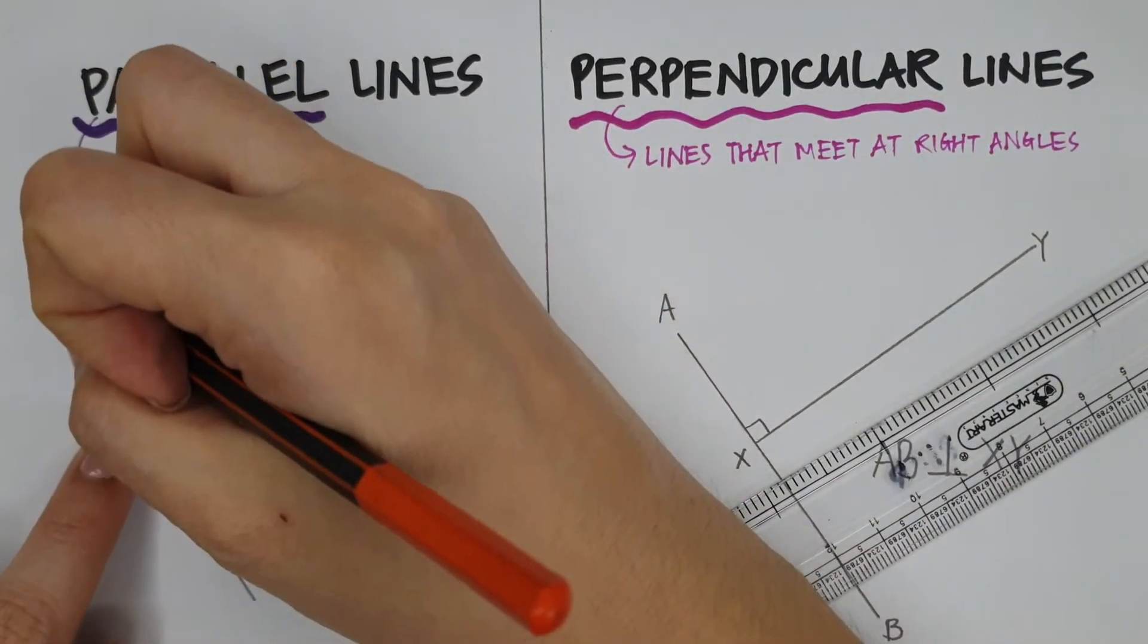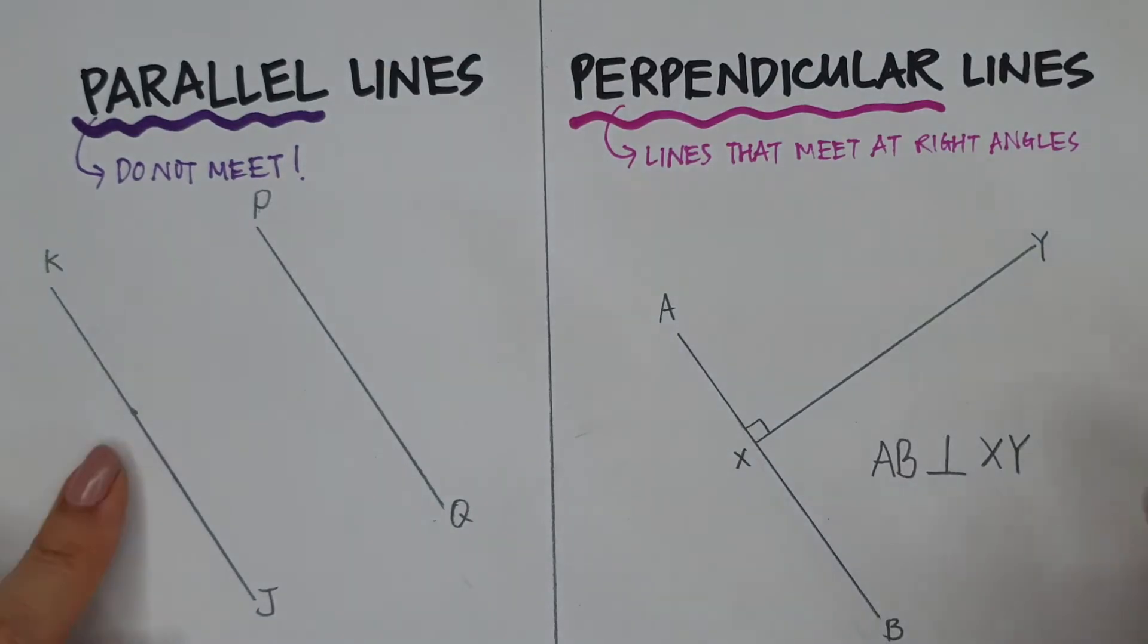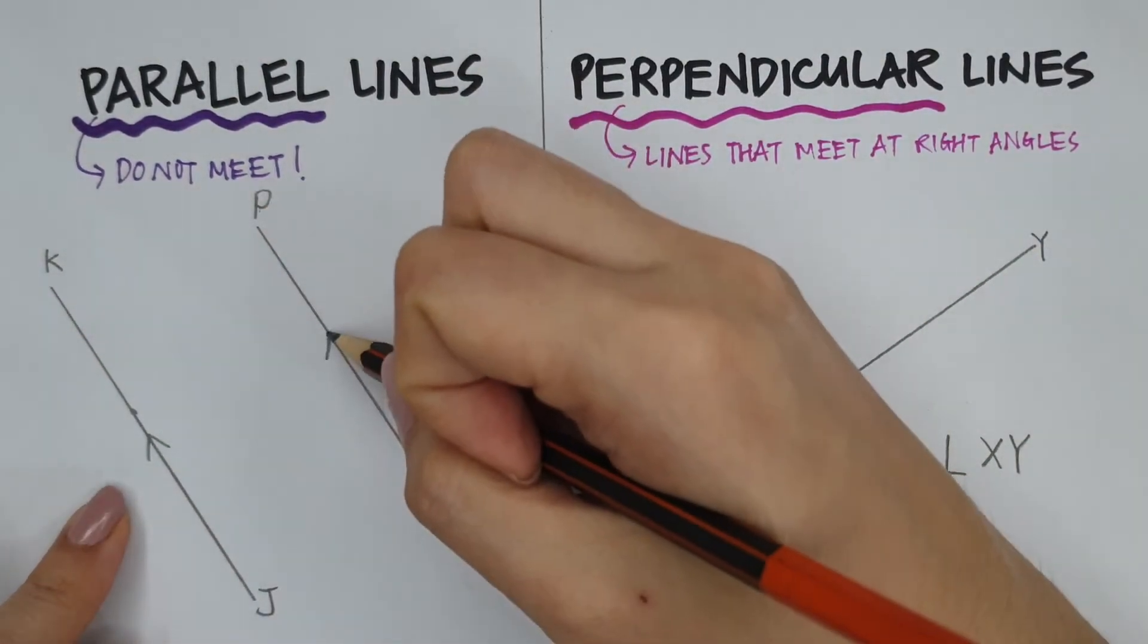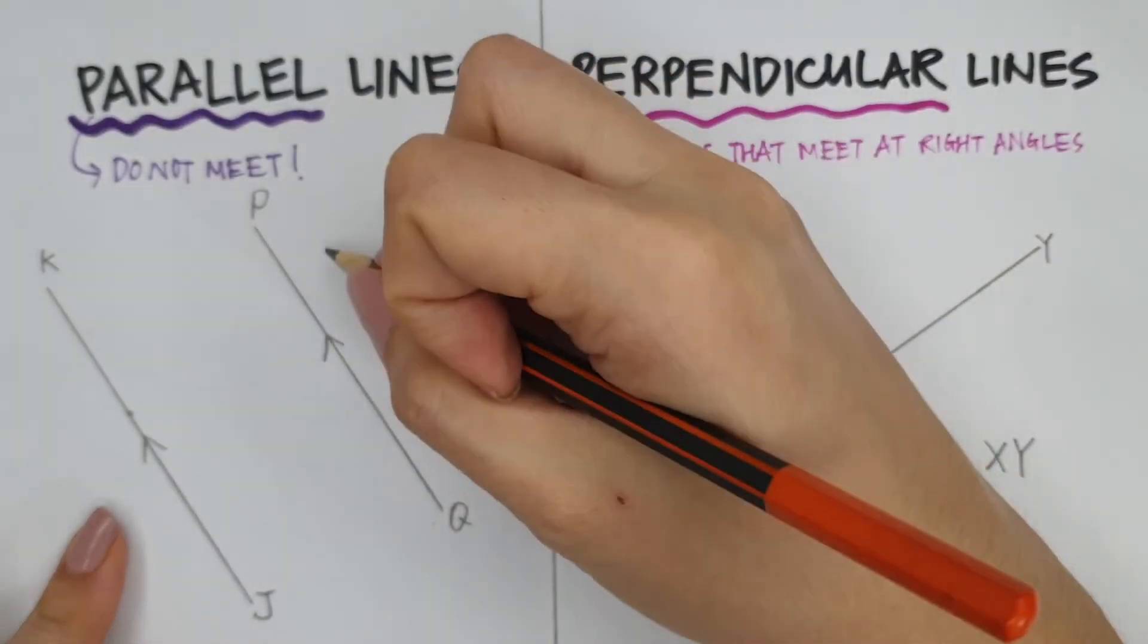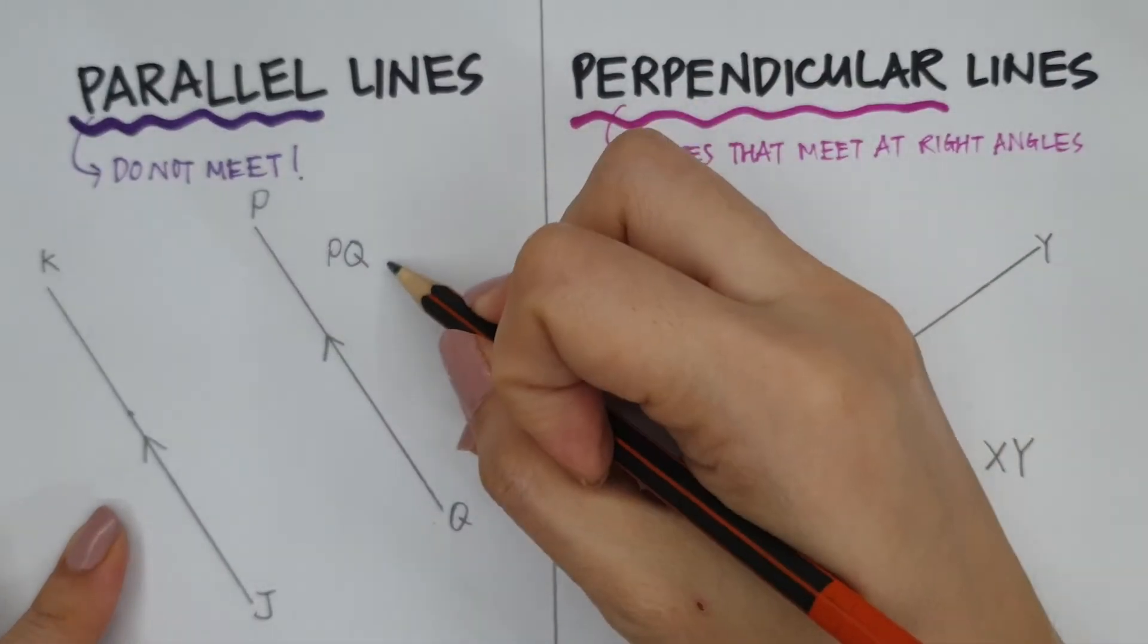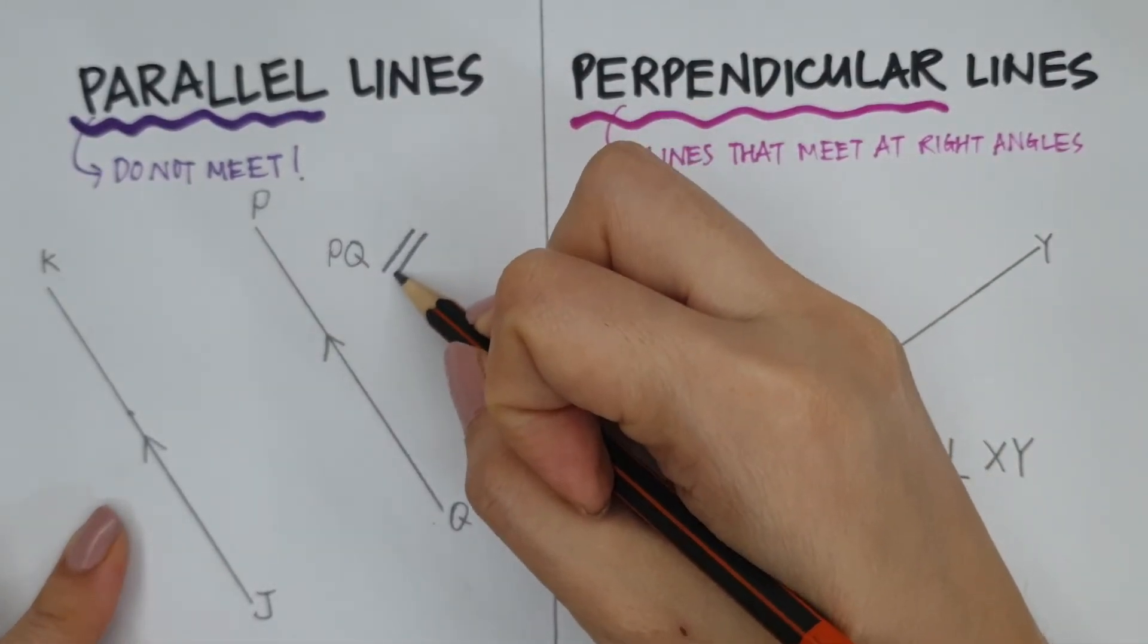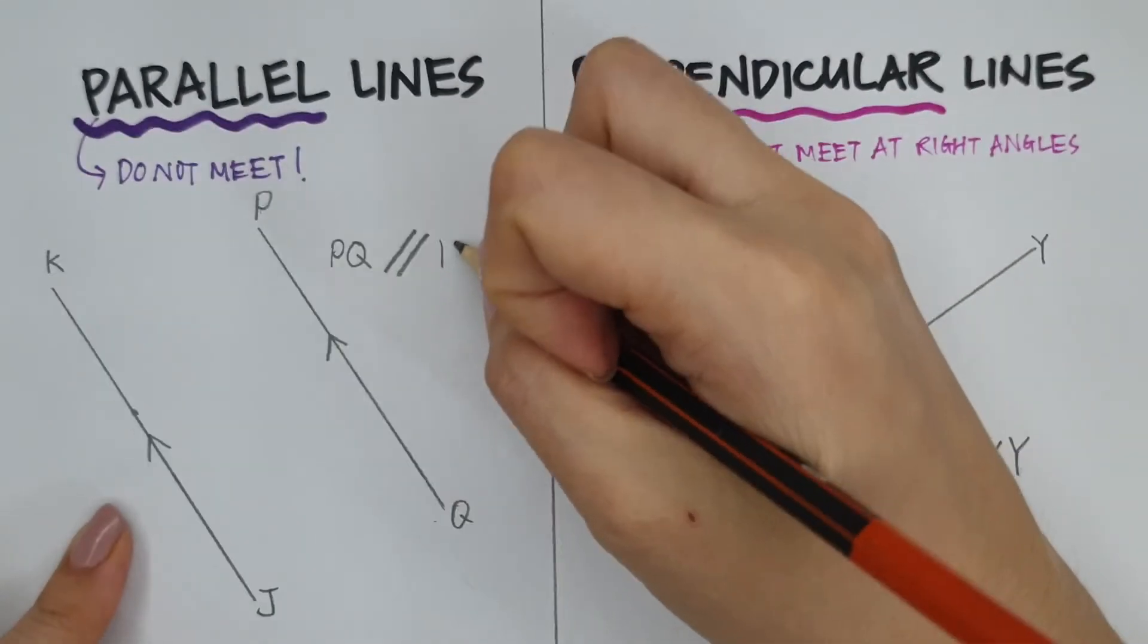Let me call it KJ. To indicate that it is parallel, I'm going to put arrows in the same direction. And how do I write it out? I'm going to write it out as PQ. Now, notice the symbol for is parallel to. It's two lines slanted in an angle that do not meet, parallel to KJ.